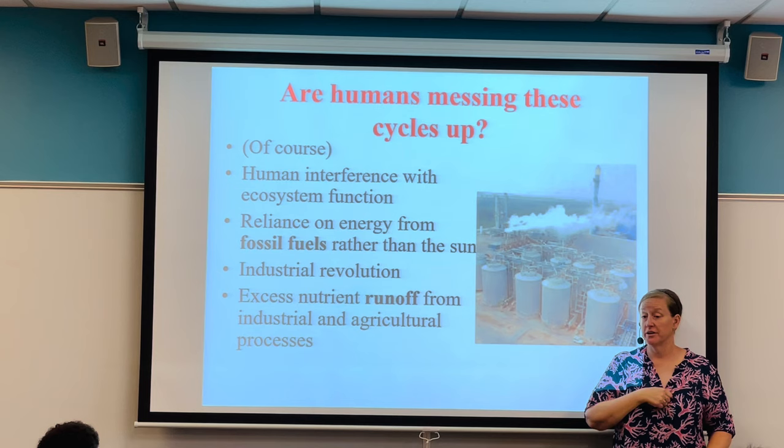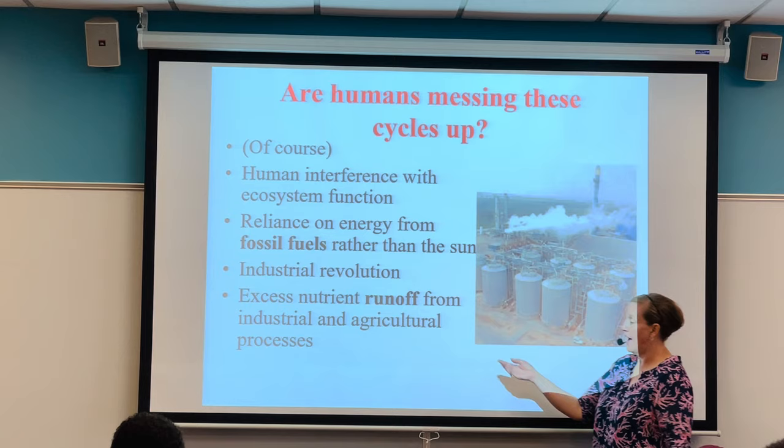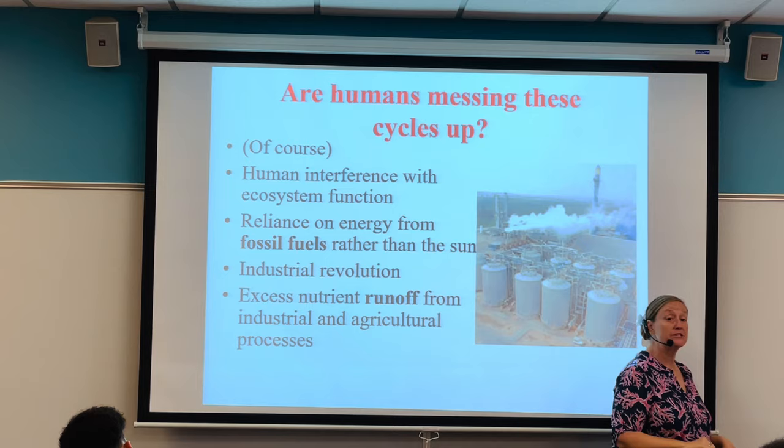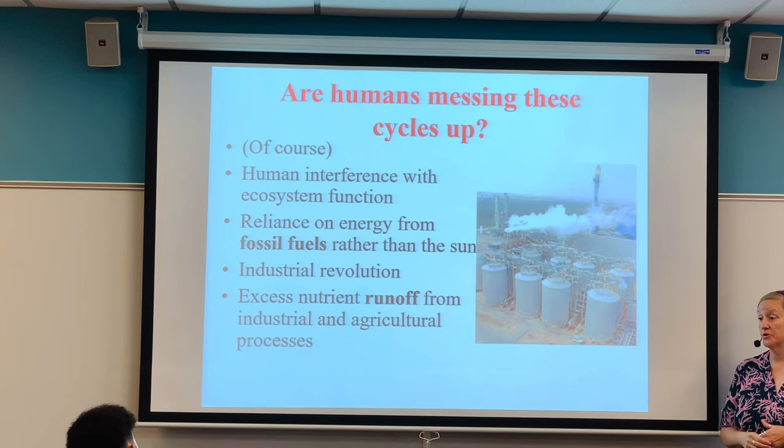Gases from industrial processes enter the atmosphere and can come back down through precipitation into our soil. Agricultural processes also introduce chemicals — like herbicides used to deter weeds — that can be dangerous to us and to the things we eat, and then those chemicals end up in our bodies.